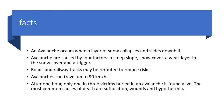Roads and railway tracks may be at reduced risk. Sometimes railroads and roads near mountains cannot reduce casualties, so they change the route and redirect people so they won't be hurt. Avalanches can travel up to 90 kilometers per hour. After one hour, only one of three victims buried in an avalanche is found alive.